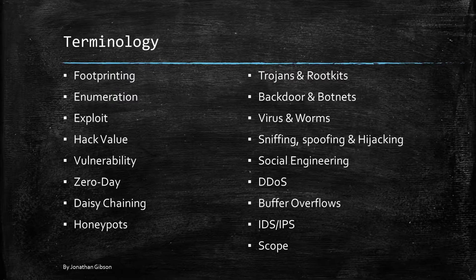A honeypot is a computer system mechanism set to detect, deflect, or log a hacker's movements on the network. They are purposely vulnerable machines, or a network of machines, giving the security team a chance to patch or fix any flaws that the hacker might have found on the honeypot. Honeypots are often exact replicas of the existing network that the hackers are trying to break into.